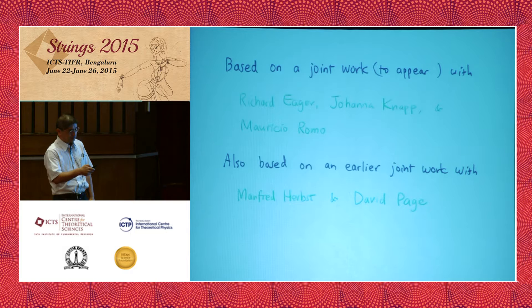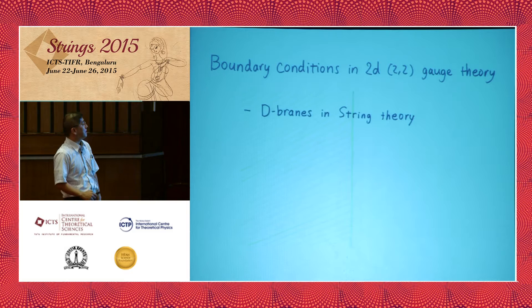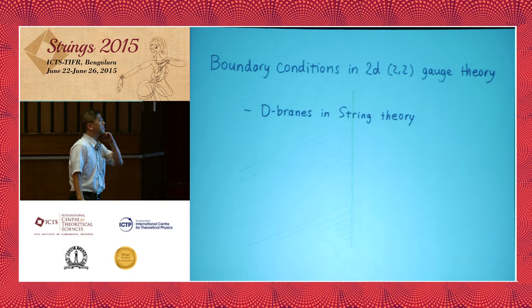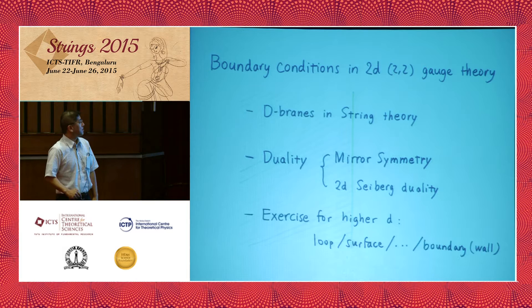The subject of this talk is boundary conditions in 2D (2,2) supersymmetric gauge theory. This is obviously relevant for the study of D-branes in string theory, and is also an interesting problem from the point of view of quantum field theory. Especially in 2D (2,2), this is a place where two interesting dualities meet, and understanding the correspondence between boundary conditions under these dualities is an interesting problem. This can also be regarded as an exercise for the study of defect operators in higher dimensional field theories.